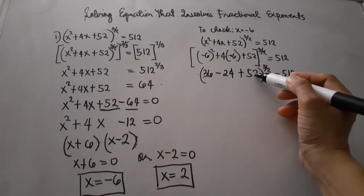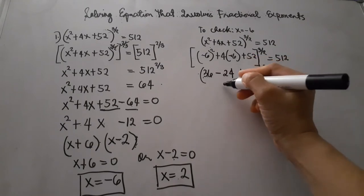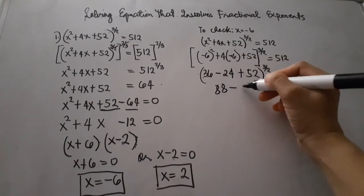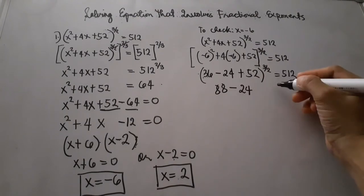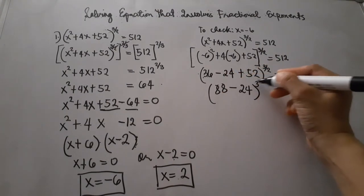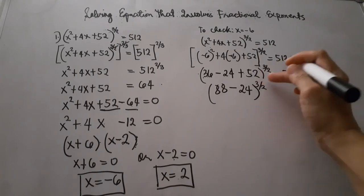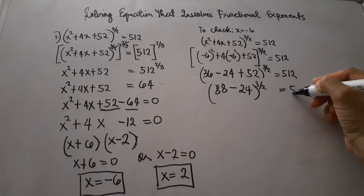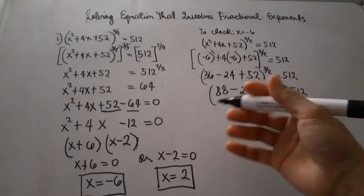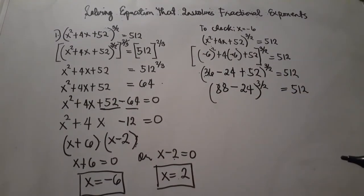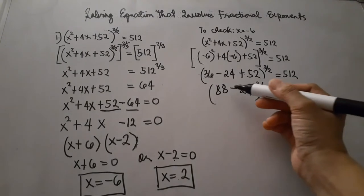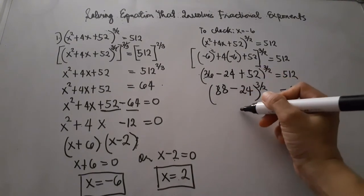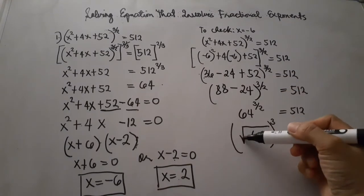We add and subtract the terms: 36 plus 52 is 88, then 88 minus 24 is equal to 64. So we have 64 raised to the power of 3 halves, with the raising power still applied, is equal to 512.